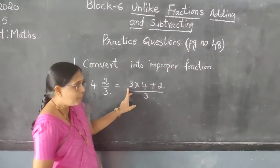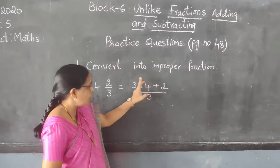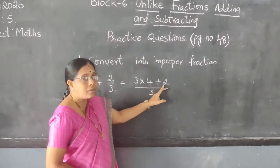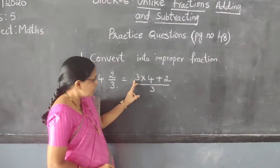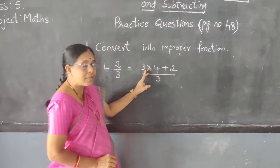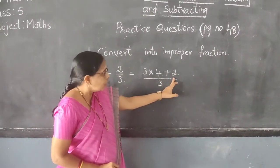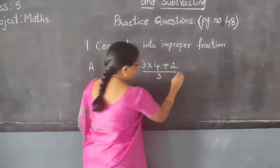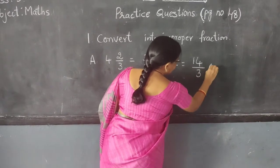Now, multiply 3 into 4 then add. First, always you have to multiply, children. Don't add 4 plus 2 first — don't multiply after. So first do multiplication, then add. 3 into 4 is 12, plus 2 is 14. So 14 by 3 is the answer.